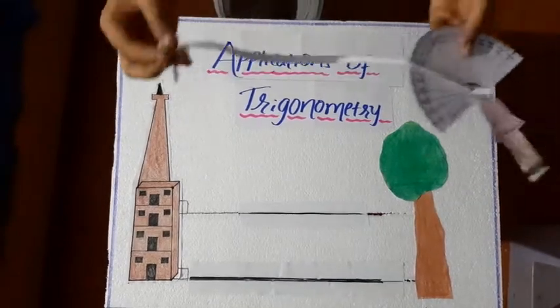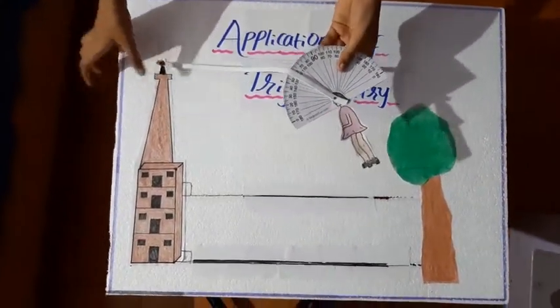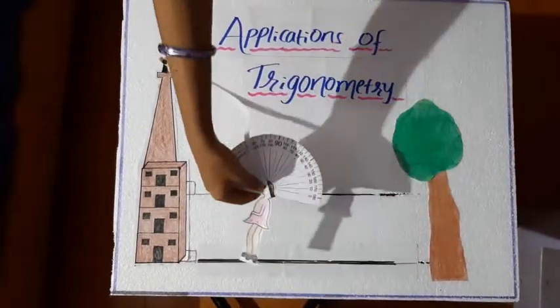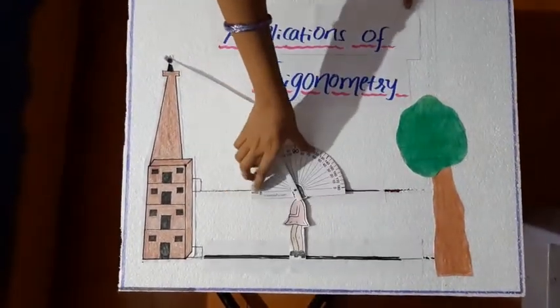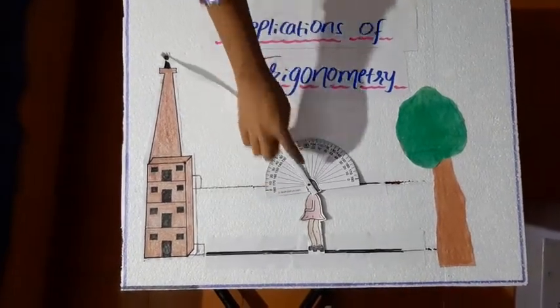We have to insert this iron nail at the top of the building and another iron nail in this pathway, as if she is standing on the ground.